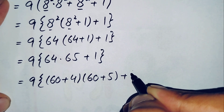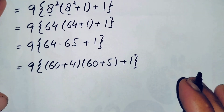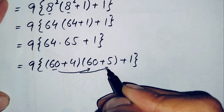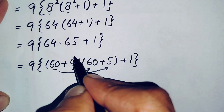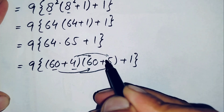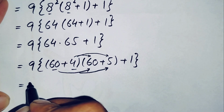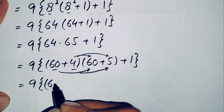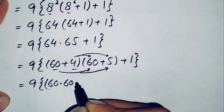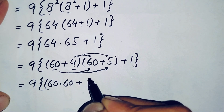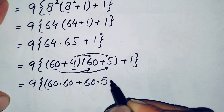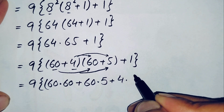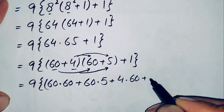Now we multiply using expansion: first multiply 60 with 60 and then with 5, then multiply 4 with 60 and then with 5. So this gives: 60×60 plus 60×5 plus 4×60 plus 4×5.